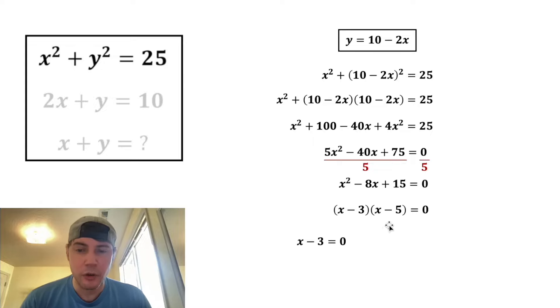So from here, if this equals zero, or if this equals zero, the whole thing will equal zero, because anything times zero equals zero. So we have this or this, and if we add three to both sides, we get x equals three, and if we add five to both sides, we get x equals five. So x can be either three or five.